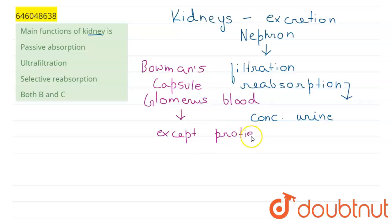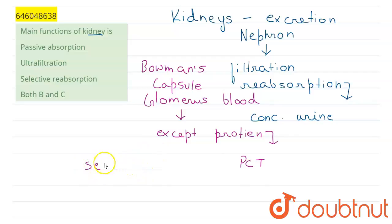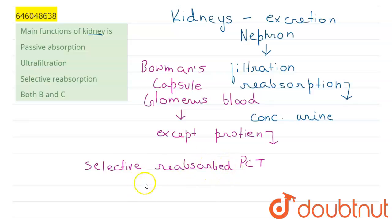This filtrate from the glomerulus is transferred to the proximal convoluted tubule of the kidney. In the proximal convoluted tubule, selective reabsorption happens — meaning the substances important for our body, along with water, are absorbed back into the bloodstream, while excretory products are eliminated.